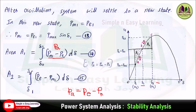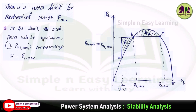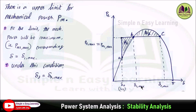There is an upper limit for the mechanical power. As mechanical power increases from A toward B, there is a maximum value Pm1_max, and the corresponding delta is delta-1_max, with delta-2 becoming delta-2_max. This represents the maximum point corresponding to the maximum mechanical power.